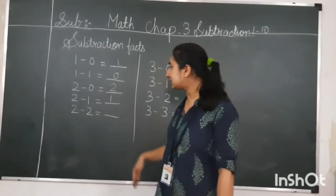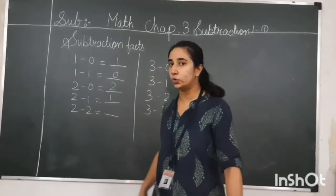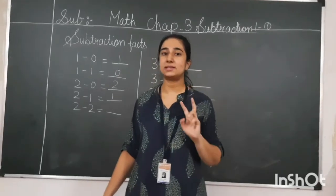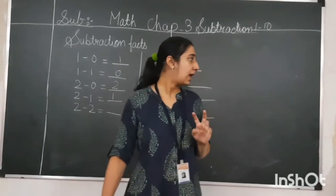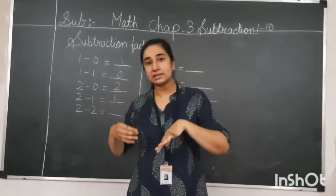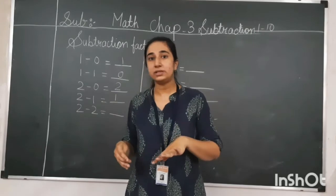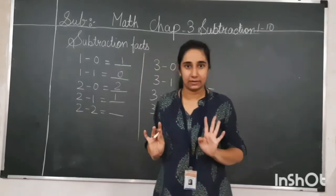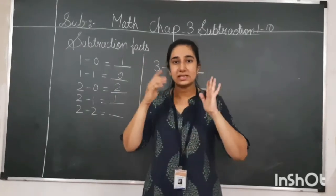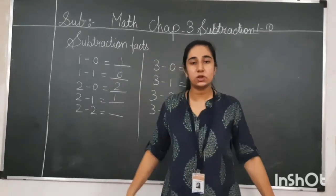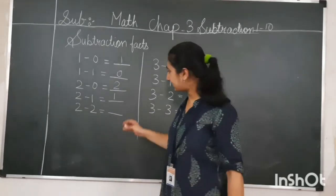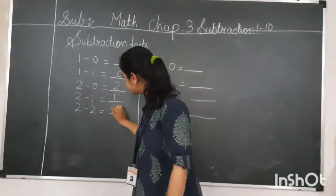Here, 2 minus 2. You are having two pencils and both pencils have been taken from you. So how many pencils will be left with you? None — the answer will be zero.